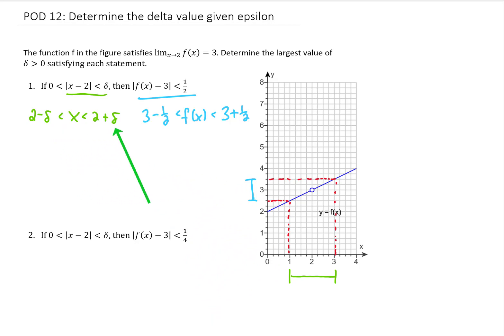So the delta that we're looking for is the delta that makes this inequality, this domain here, go from 1 to 3. That delta is going to be half of this distance here. Or you can see just algebraically if we plug in delta equals 1, that our x values are going to be between 1 and 3, which is what we're looking for.